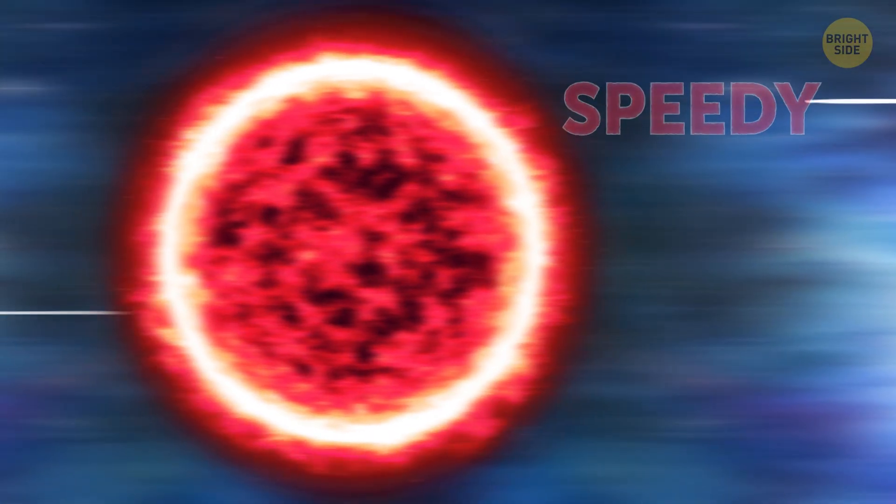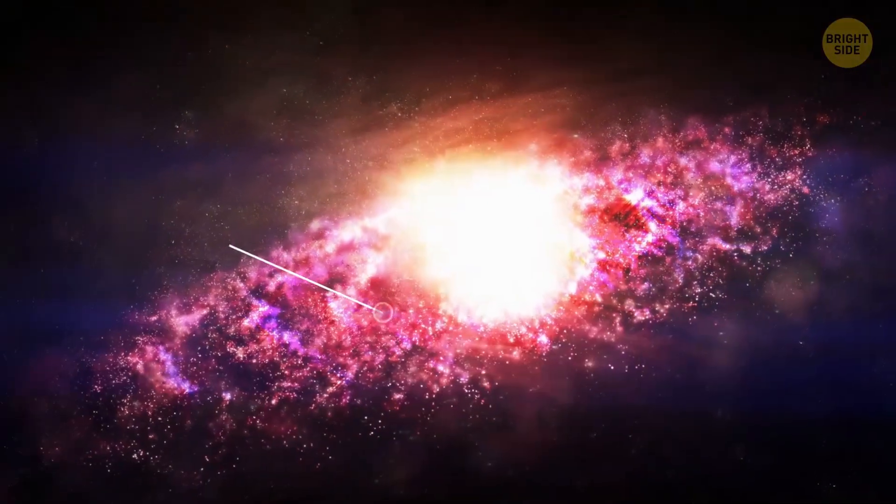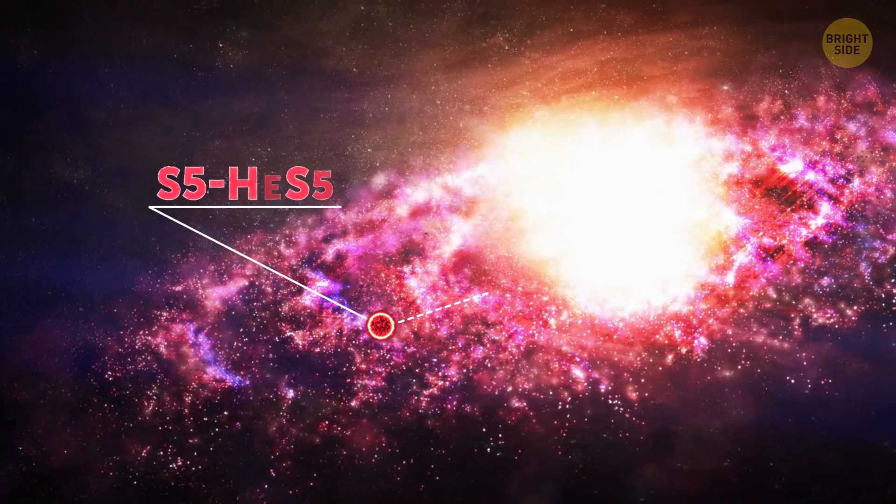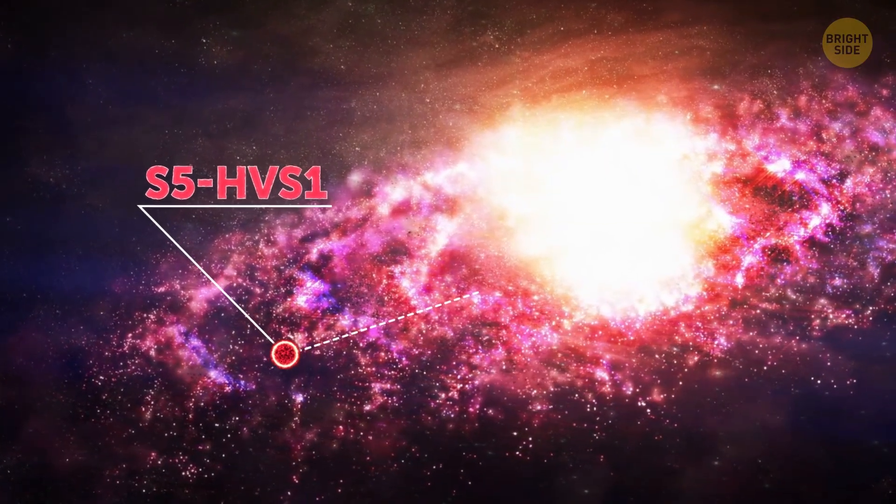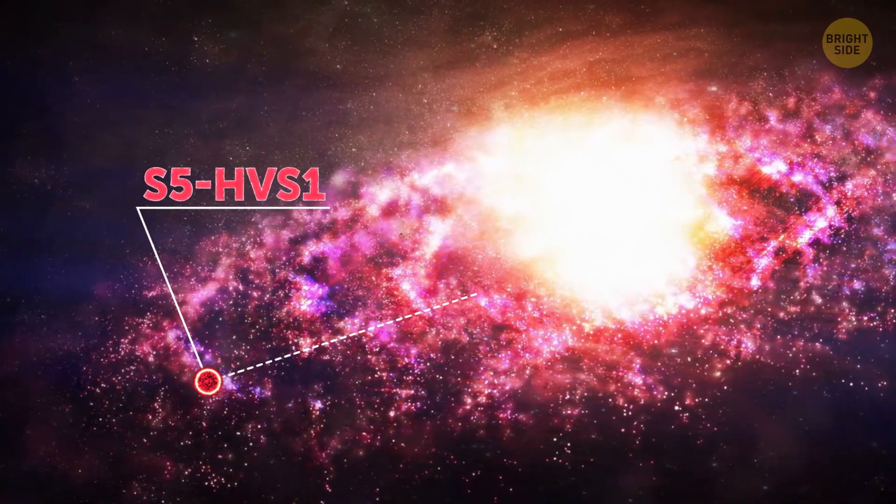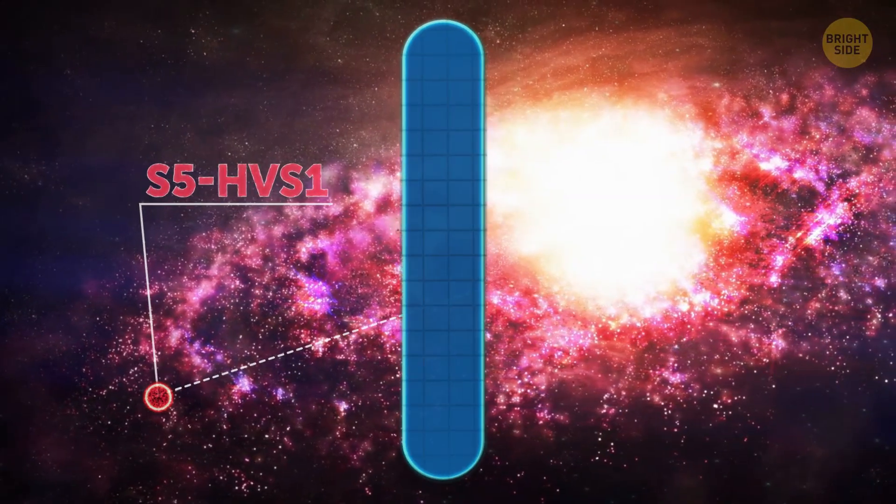However, S5HVS1, you know, let's just call him speedy. Well, speedy is no ordinary star, and its movement isn't at all normal. This recently discovered star is racing toward the outer edge of our galaxy, having been ejected from its orbit at a velocity never before seen in recorded history.